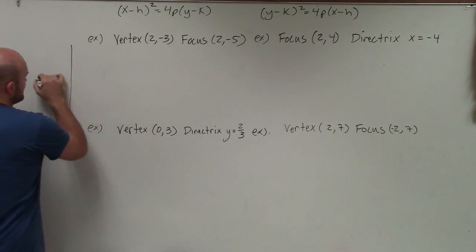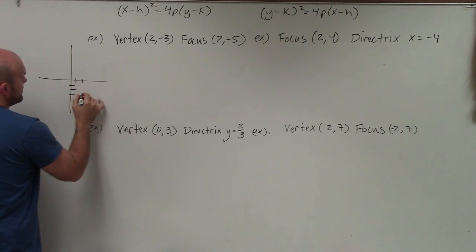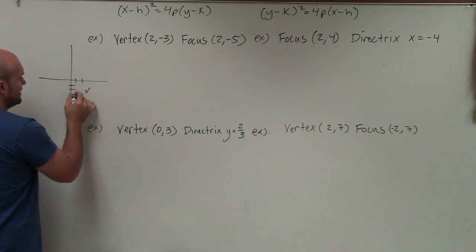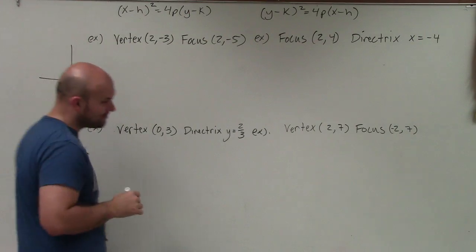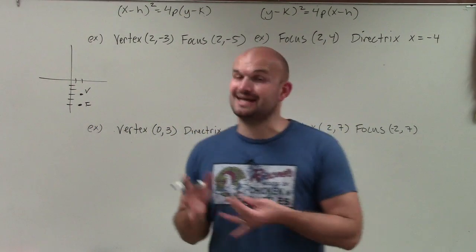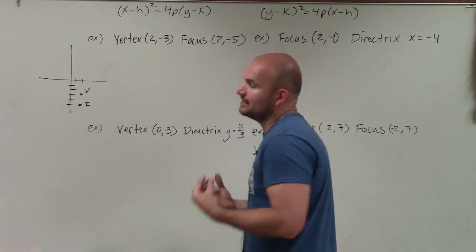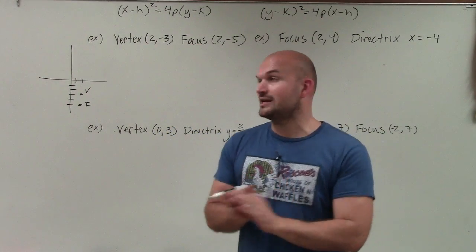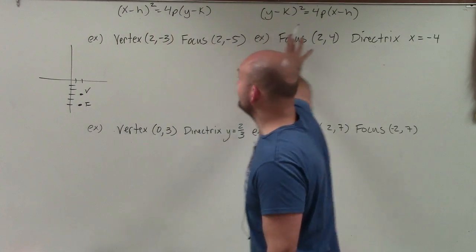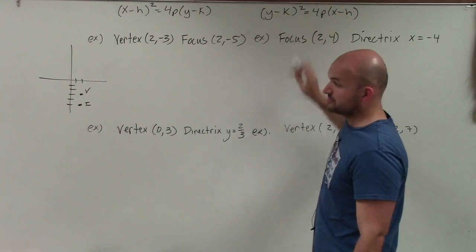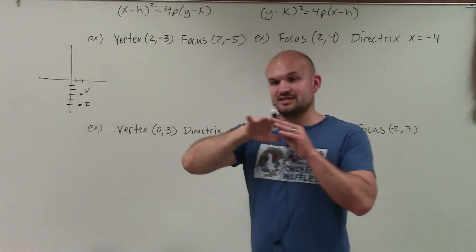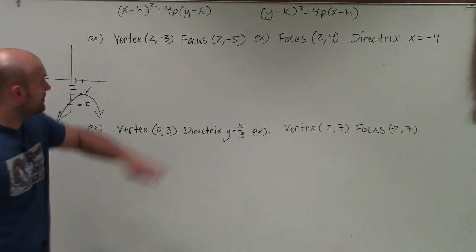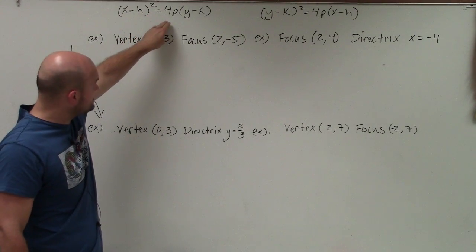For my first example, I'm going to plot my vertex at (2, -3) and label it. Then I'll plot the focus at (2, -5). Remember, a parabola either opens up or down — like in quadratic equations — or it opens left or right. If it opens up or down, x is squared. If it opens left or right, y is squared. Since the parabola always opens toward the focus, we can see it's going to open down.